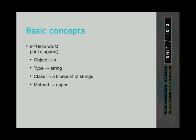Let's now look at those concepts from the programming perspective. Consider: S = 'Hello World'. This is the way we associate a value — the text — to a variable named S. Then: print(S.upper()). In these two expressions, S is the object and it is the name of a variable. The data type of this object is a string — it belongs to the class of strings, which defines what we can do with strings in general, not only with S. upper() is a method defined in the class, and it does something on our variable S — specifically, it returns a string where all the letters are uppercase.